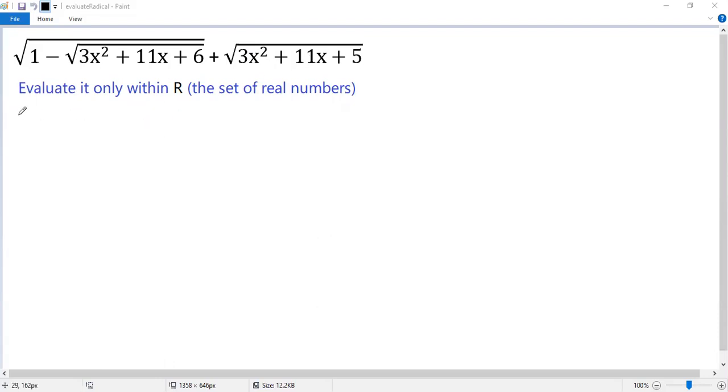So we get 3x² + 11x + 5 ≥ 0. Adding 1 to both sides, we get 3x² + 11x + 6 ≥ 1. Taking square root,